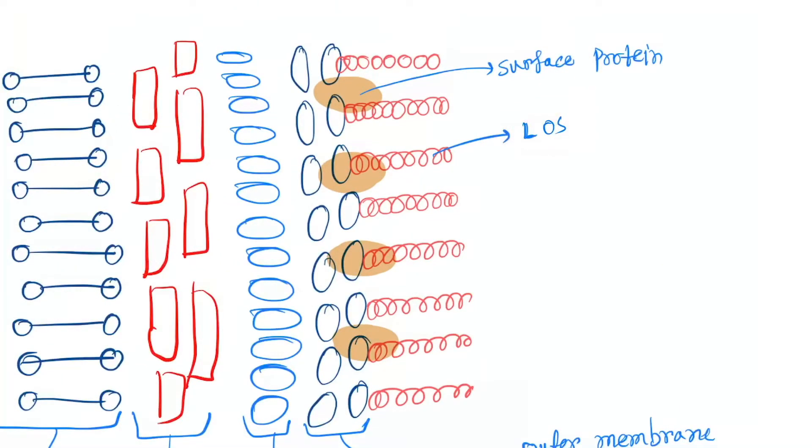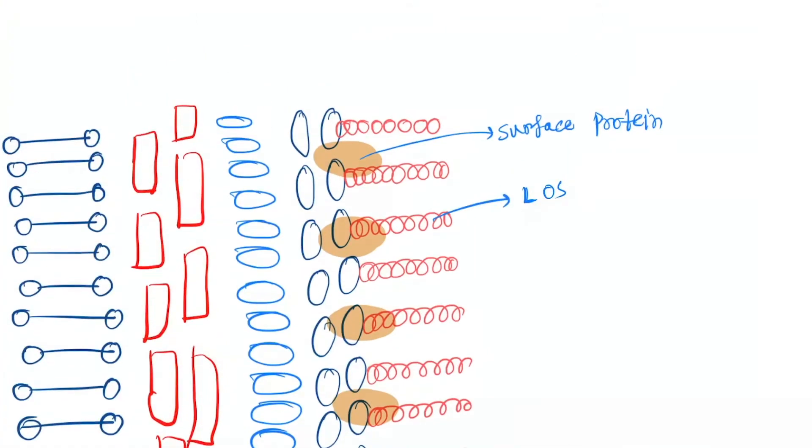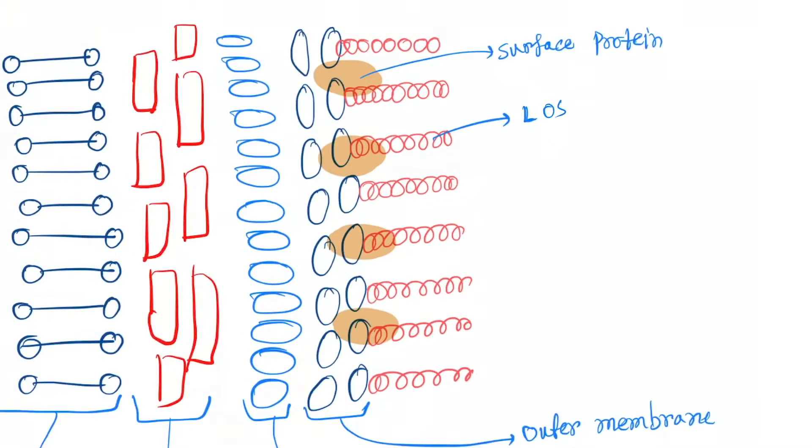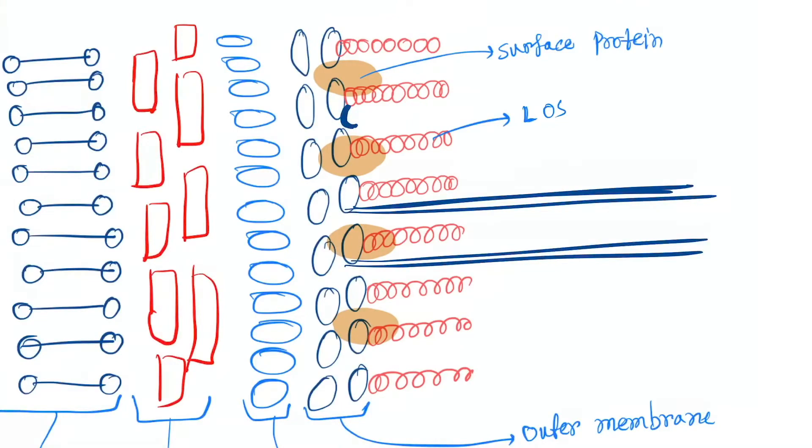In Neisseria meningitidis that was LPS lipopolysaccharide, now it is lipo-oligosaccharide. Surface proteins are there. The opacity proteins are there and also pili or fimbriae are present.